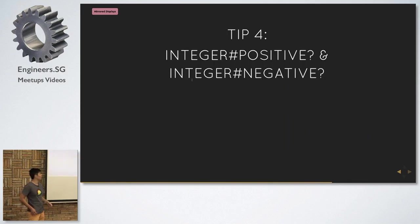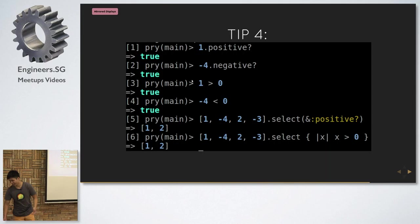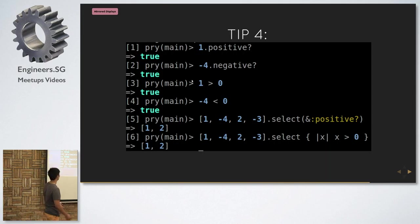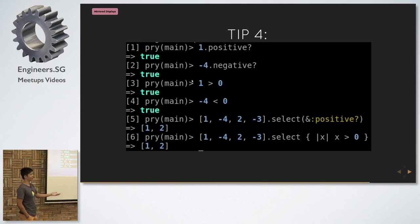Tip number four: in Ruby 2.3, they added `positive?` and `negative?` methods. Initially I was like, why in the world do you need this? It's like just checking if a number is greater than zero or less than zero. And on zero, it's false all the time. So initially I was thinking, why in the world do you need it?